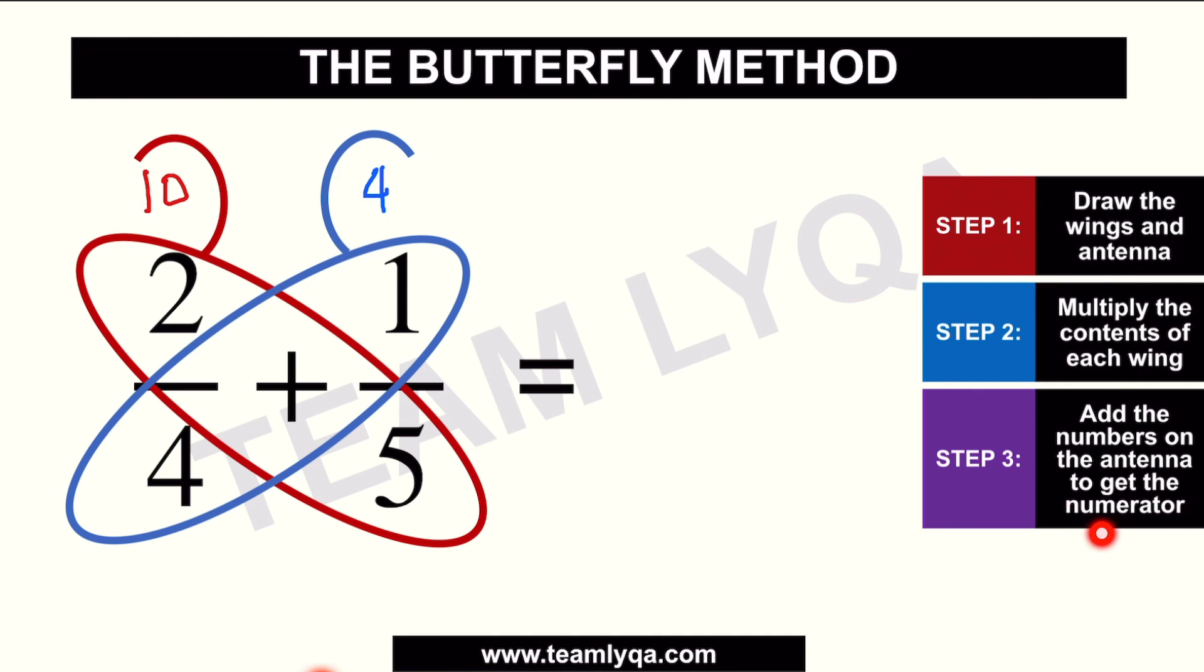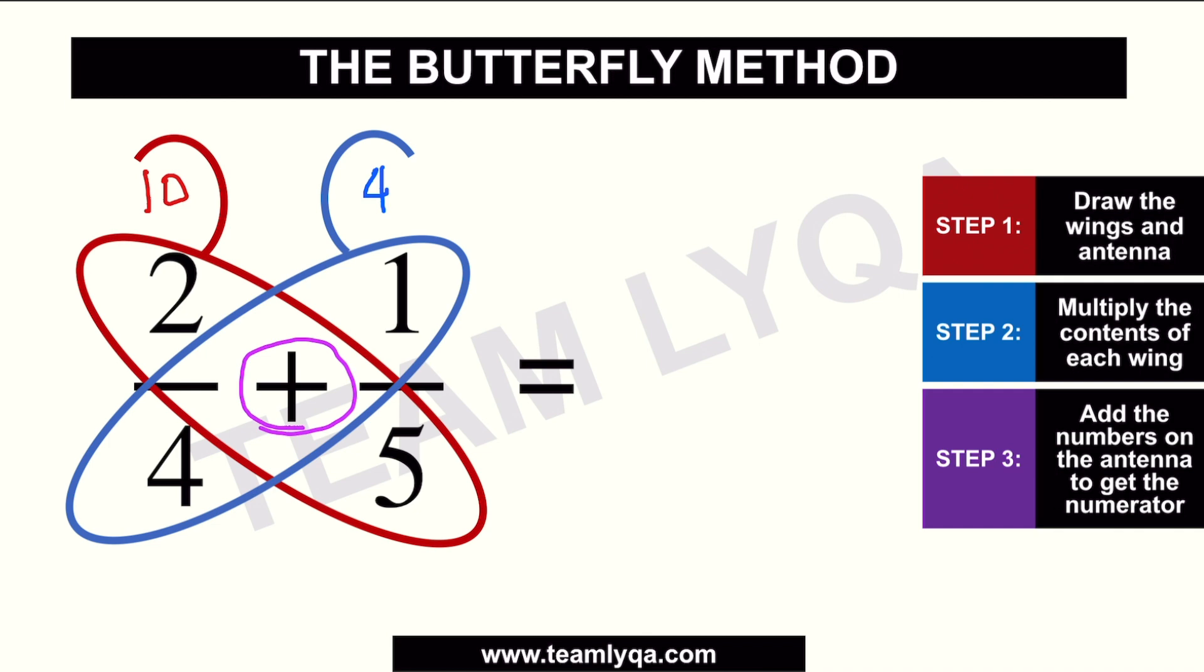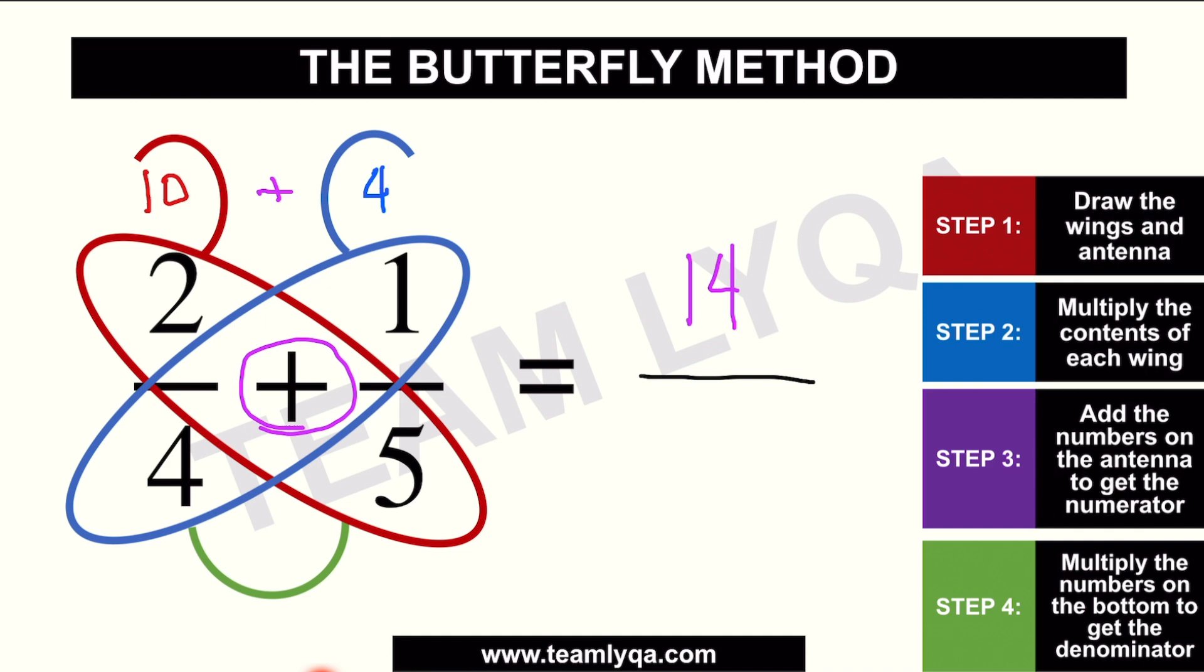Step 3 is to add the numbers on the antenna to get the numerator. Dahil addition yung ating operation, ia-add ko ngayon ito. So, 10 plus 4 is 14. This will be the numerator. At para makuha naman yung denominator, what we're going to have to do is to multiply the numbers on the bottom. So, nasan yun? Ito yun. Gagawin natin to curve it or sabi nga nila complete the butterfly. Kasi di ba yung butterfly, meron naman siyang body, no? Ang gagawin natin, 4 times 5. That would give us 20. So, 14 over 20. Now, as you can see, ito rin yung sagot natin kanina using the traditional method. Pero, for a lot of people, this is faster for them. Again, ilo-lowest terms pa rin natin. Divide natin both by 2. This will be 7 over 10. So, pareho lang yung sagot dun sa kanina. Iba lang yung process na ginawa natin.